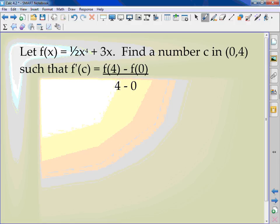We're going to let f(x) equal one-half x to the fourth plus 3x. We're going to find the number c in (0,4) such that f'(c) equals f(4) minus f(0) over 4 minus 0.